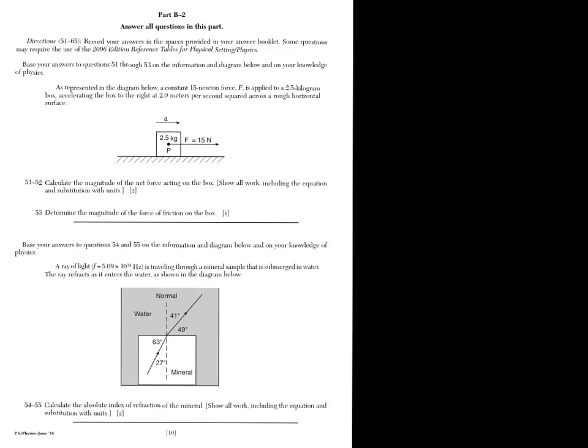What's up physics nerds? Now we're on to the free response section of our 2016 physics regents. Starting with part B2, I'm going to tell you some tips and tricks about the free response section. Questions with two numbers attached like 51-52 are worth two points. This means you have to show your work, and the only way you're going to solve this is by using an equation in the reference table.